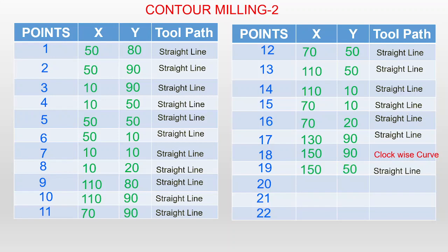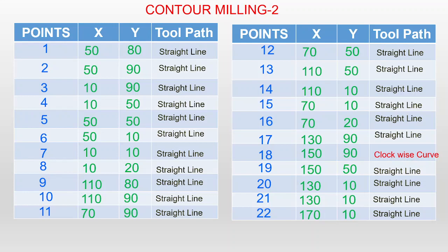Point 19: X = 150, Y = 50. Point 20: X = 130, Y = 10. Point 21: X = 130, Y = 10. Point 22: X = 170, Y = 10, straight line. Once you prepare this tabular form for all the points — their coordinates, X value, Y value, tool path — it is very helpful while writing the program without making mistakes. It is better to prepare a table and complete all the coordinates of all the identified points on the surface.